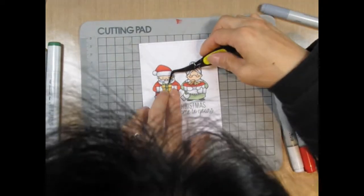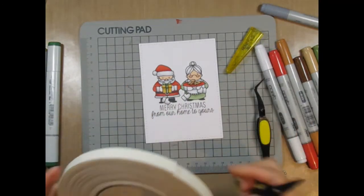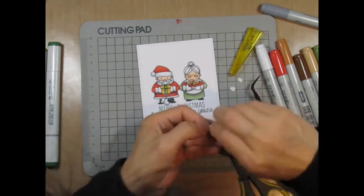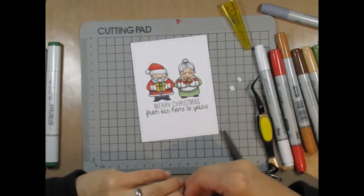And then for the extra set of mittens, I'm going to apply them with foam tape so that they're popped up. It gives the images a 3D element.